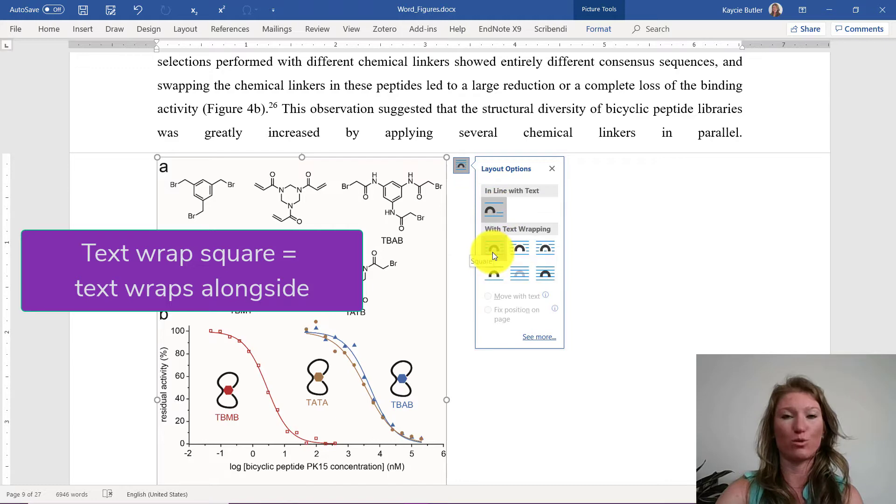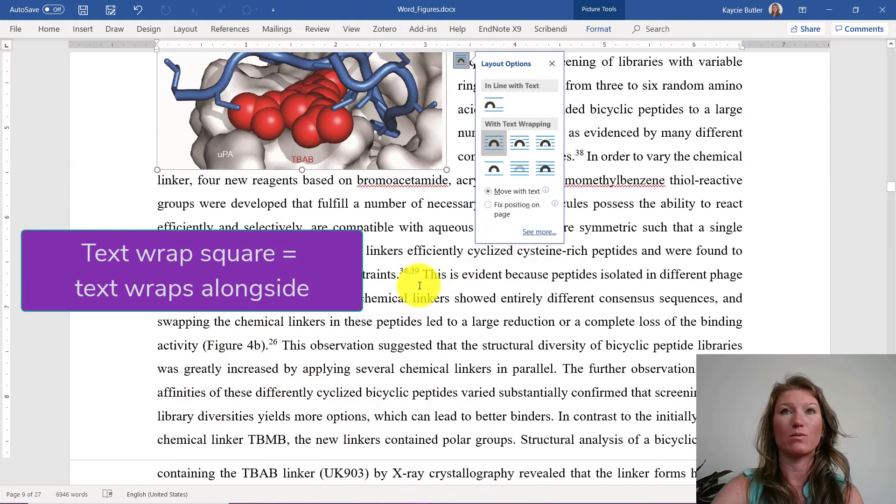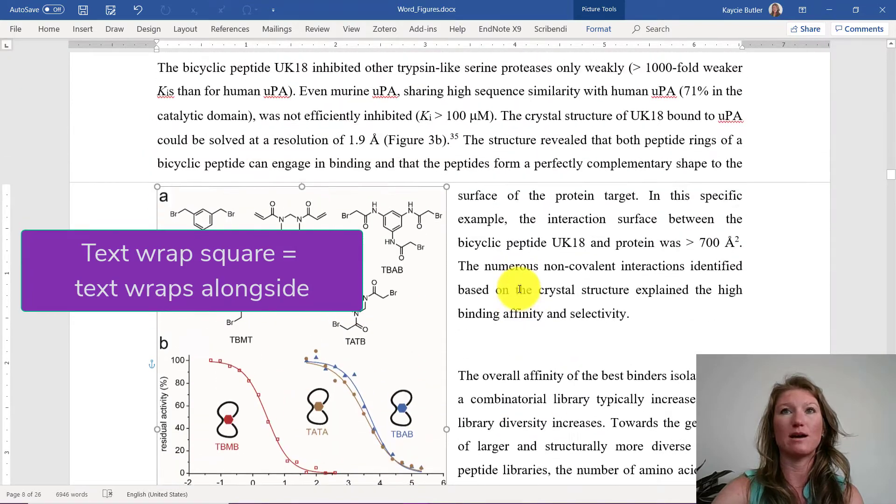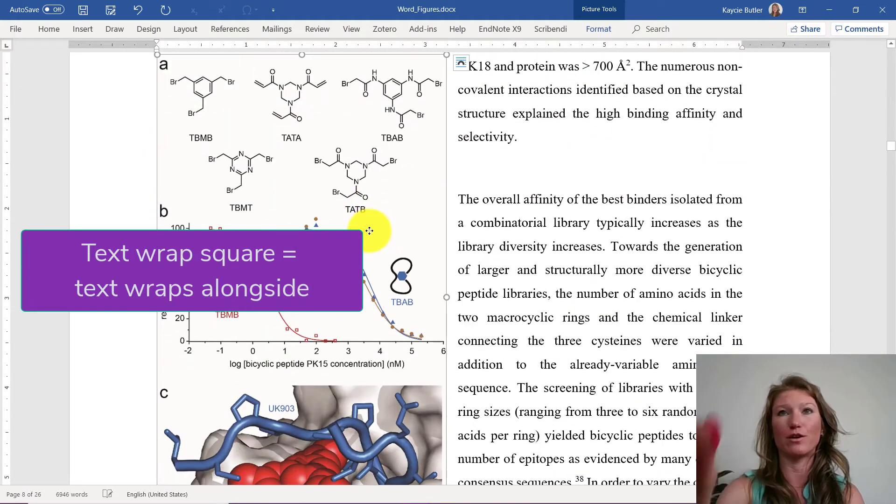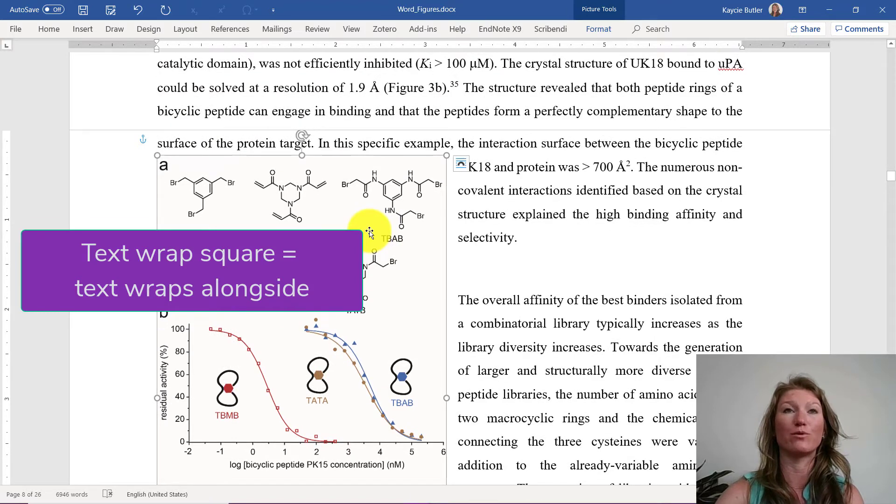So we're going to move down here for text wrapping. And one of the best options is just going to be square. And when we click that, we see that the text now wraps all around our figure along the side like it wasn't before.